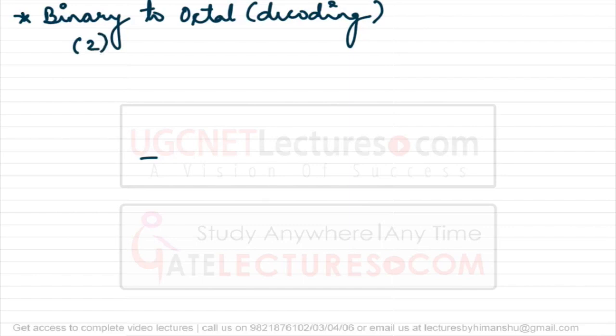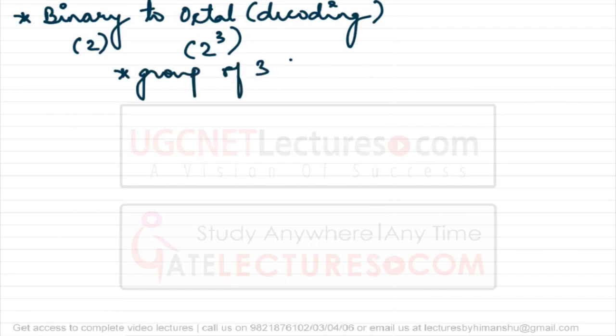Now the reverse: given a binary number, convert it to octal. Binary has base 2 and octal has base 2 to the power 3, so one octal digit represents 3 binary digits. When given a binary number, you group the bits in groups of 3, and each group of 3 bits represents one octal digit. Let's look at an example.